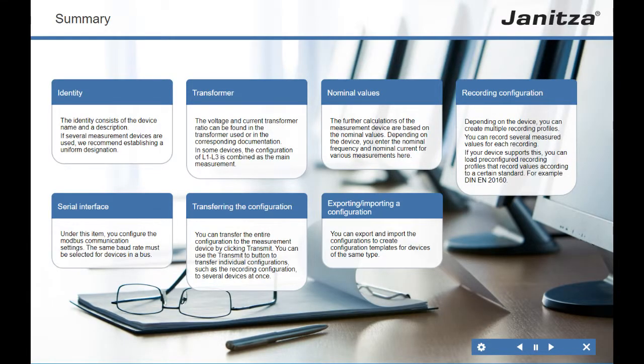Summary — Identity: The identity consists of the device name and a description. If several measurement devices are used, we recommend establishing a uniform designation. Transformer: The voltage and current transformer ratio can be found in the transformer used or in the corresponding documentation. In some devices, the configuration of L1, L2, and L3 is combined as the main measurement. Nominal Values: The further calculations of the measurement device are based on the nominal values; depending on the device, you enter the nominal frequency and nominal current for various measurements.